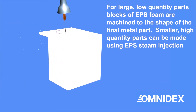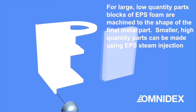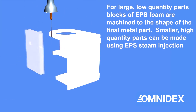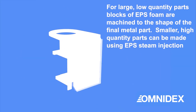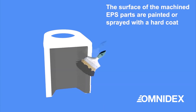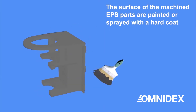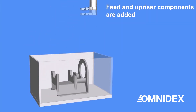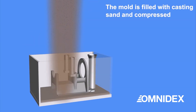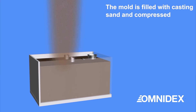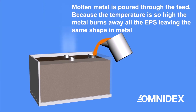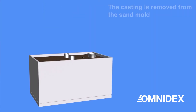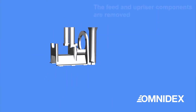Lost foam casting is similar to sand casting, but EPS foam is used for the pattern instead of wood or aluminum. The foam pattern is placed in a sand box, and the molten metal melts away the foam to produce the metal part. It is a popular casting solution for single-run or short-run production.